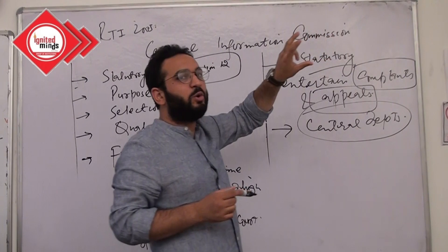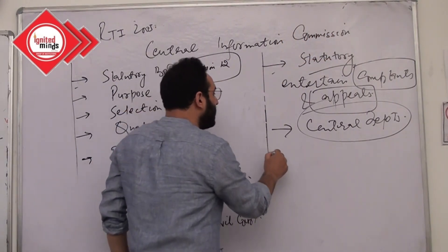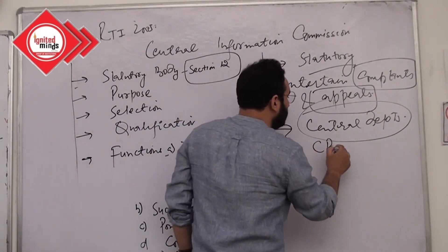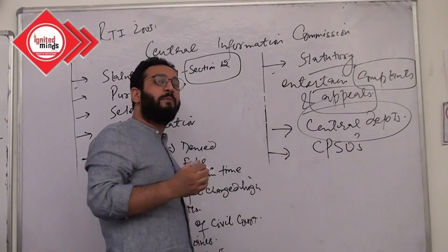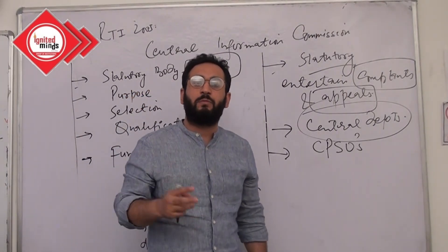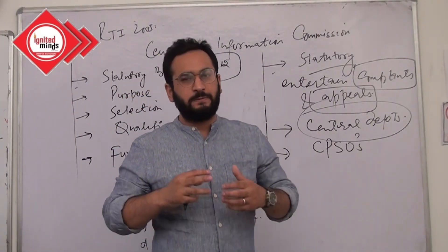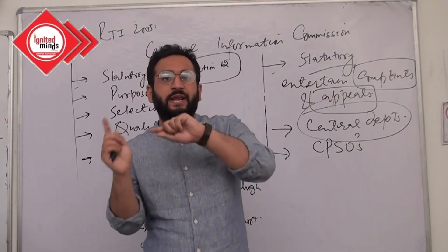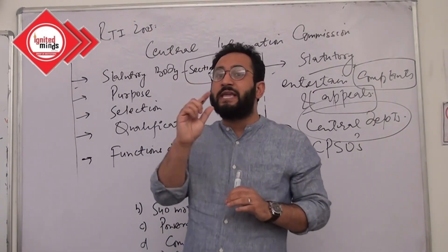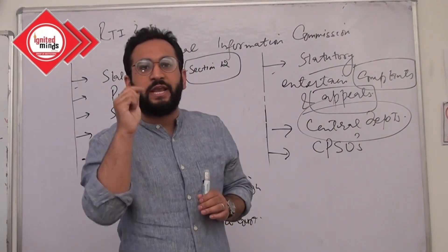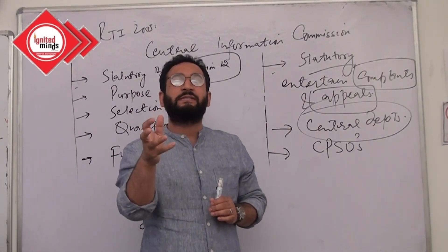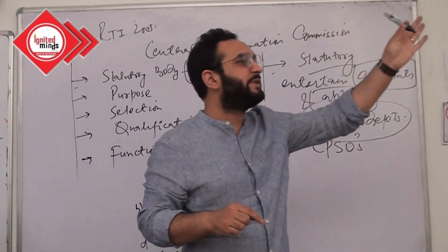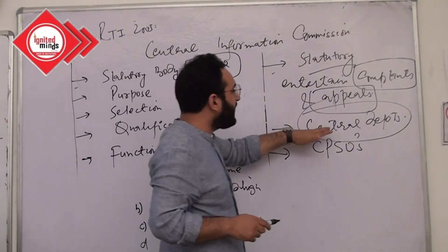Similarly, if there is a complaint related to CPSUs — Central Public Sector Undertakings — such as Oil India Limited, SAIL, GAIL, Coal India Limited — these are government Public Sector Undertakings, hence public authorities. If a citizen has a grievance under RTI against them, they can take that complaint and appeal to the Central Information Commission — for central departments, Central Public Sector Undertakings, and union territories.